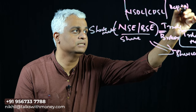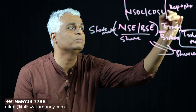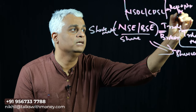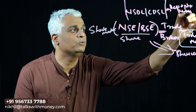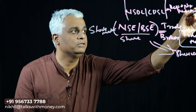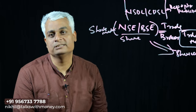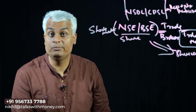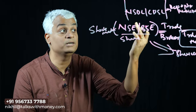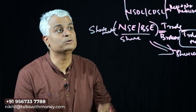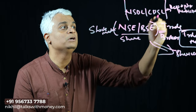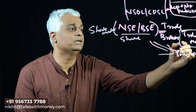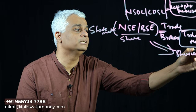These are called Depository Participants. If you have a depository participant, you can join a branch. If you have a broker, then your broker acts as a depository participant. There are many depository participants.